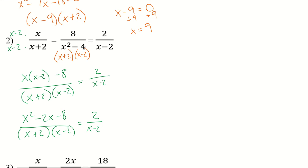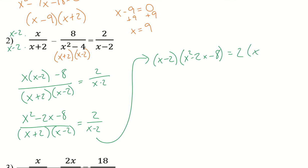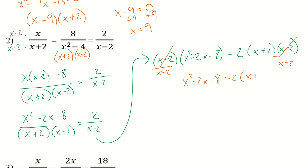Now I'm going to do my cross multiplication. I have x minus 2 times x squared minus 2x minus 8 equals 2 times x plus 2 times x minus 2. I can eliminate x minus 2 on both sides by dividing, so I'm left with x squared minus 2x minus 8 equals 2 times x plus 2.